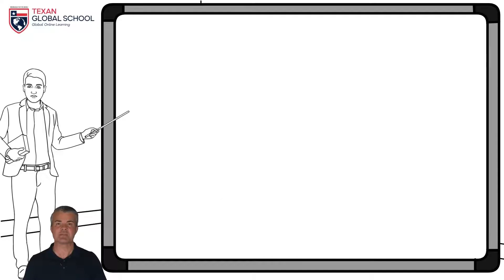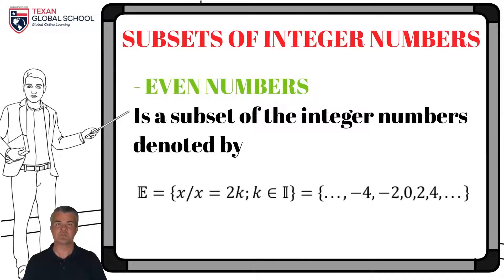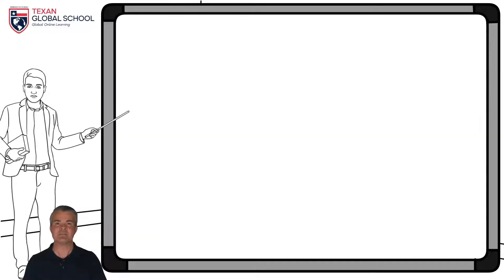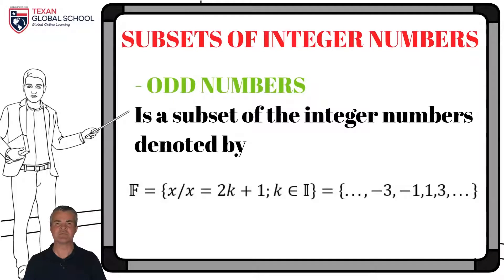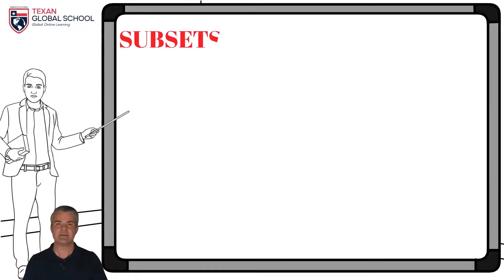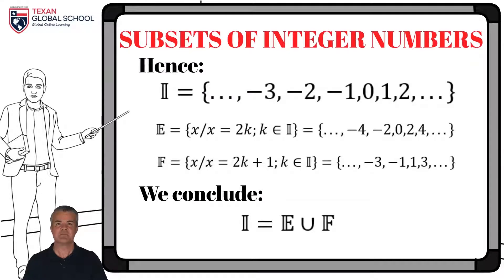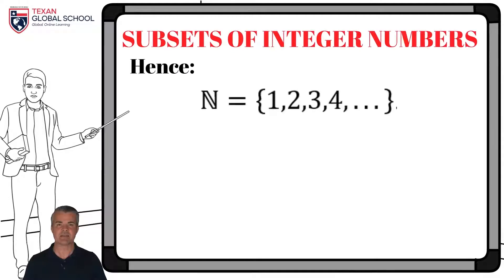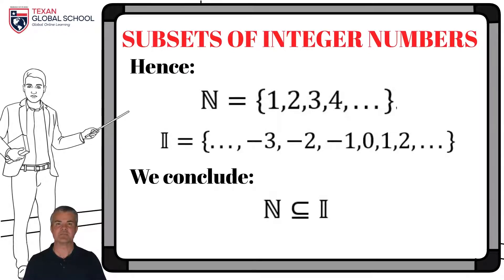The integer numbers have two other subsets. The set of even numbers, expressed by all those numbers in the form 2k. These numbers can be divided by two. According to this definition, zero belongs to this set since it is divisible by two. On the other hand, the set of odd numbers has the form 2k plus one. When divided by two, these types of numbers leave a remainder different to zero, such as five, seven, or twenty-nine. From these definitions, we can also conclude that the set of integers is equivalent to the union of the set of even numbers with odd numbers. We can see that integer numbers contain both subsets. Analyzing the elements of the set of natural numbers and the elements of the set of integers, we can conclude that the natural numbers are a subset of the integers.